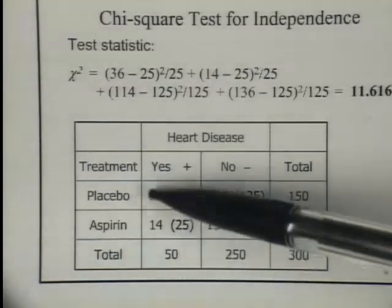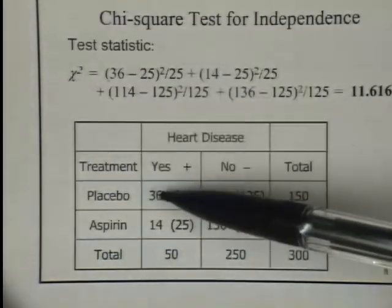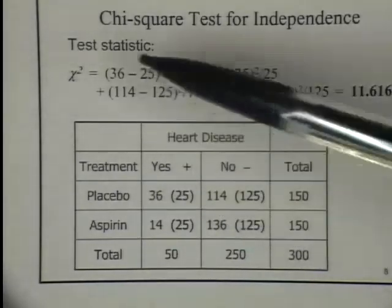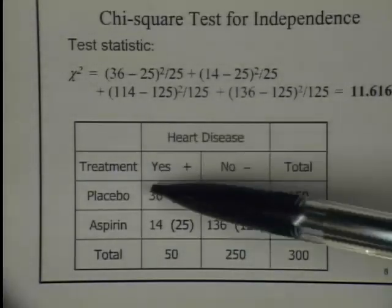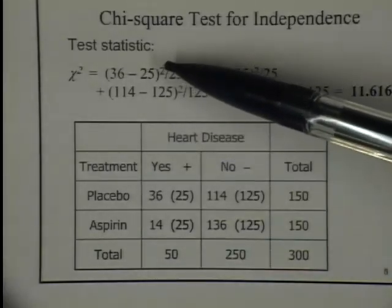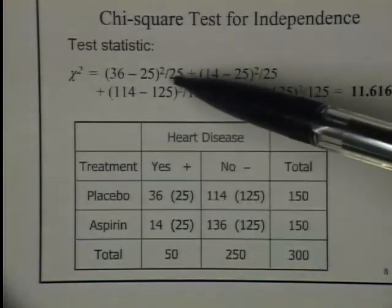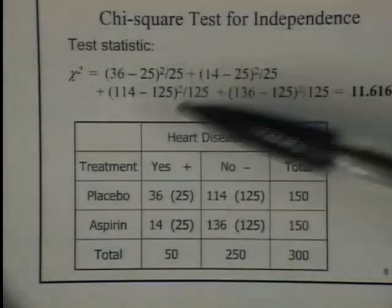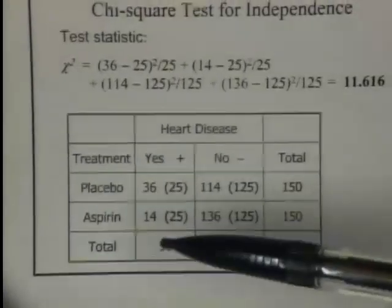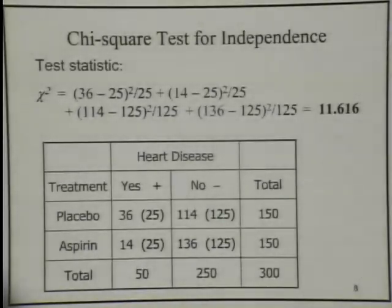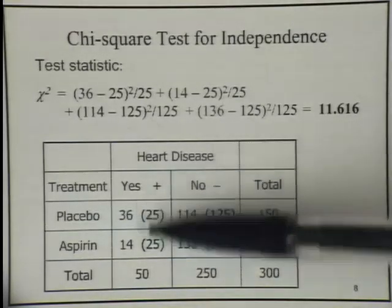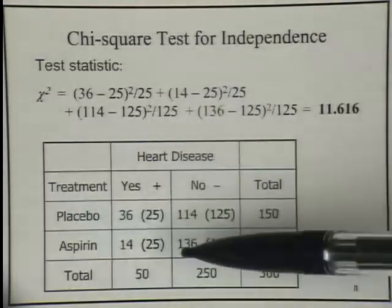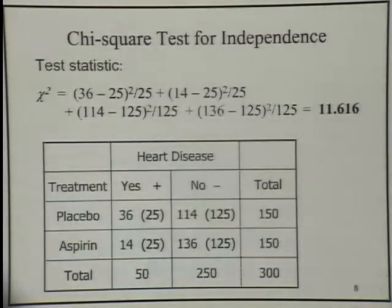To measure the difference between observed and expected frequency, we find the difference for each cell — for example 36 minus 25 — square it so there's no cancellation, and divide by the expected cell count. We do that for all four cells and add them together. That's how we form the chi-square statistic. If the difference between observed and expected is high, we believe there's strong correlation. The larger the chi-square score, the more likely you are to reject the null hypothesis.